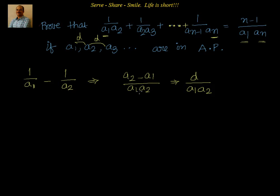So, that is good. We are able to establish a relationship between what we want and what is given to us. So, what I can write down now, I can say that 1 by a1a2 is nothing but equal to 1 by d into 1 by a1 minus 1 by a2.